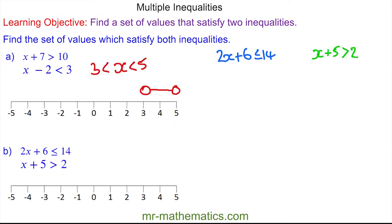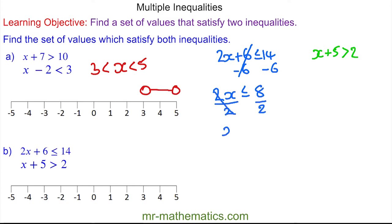We'll solve each inequality in turn. We'll take away 6 from both sides — 6 take away 6 will make 0 — so 2x will be less than or equal to 8. We'll divide both by 2, so x will be less than or equal to 4, which we can plot as a full circle going to the left.